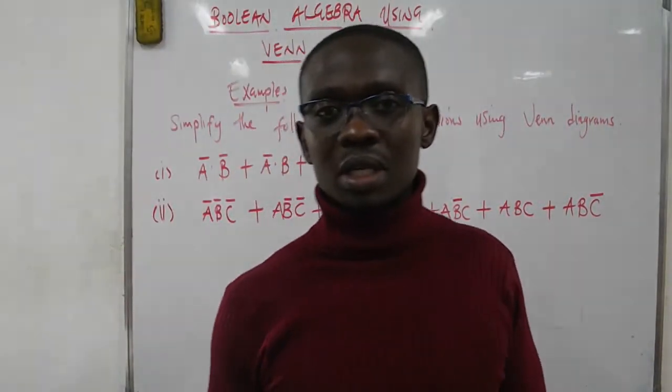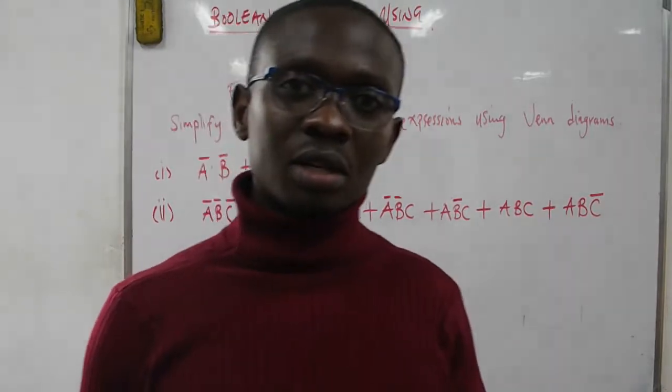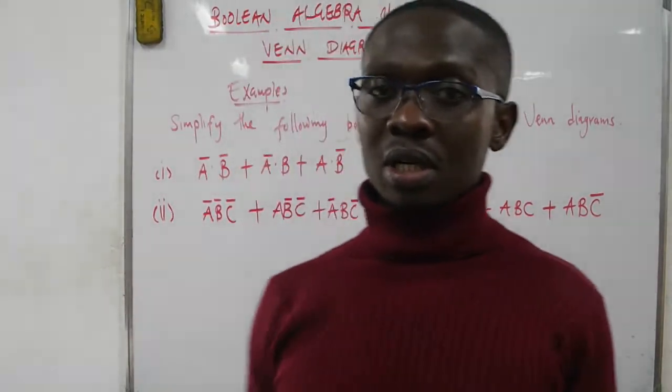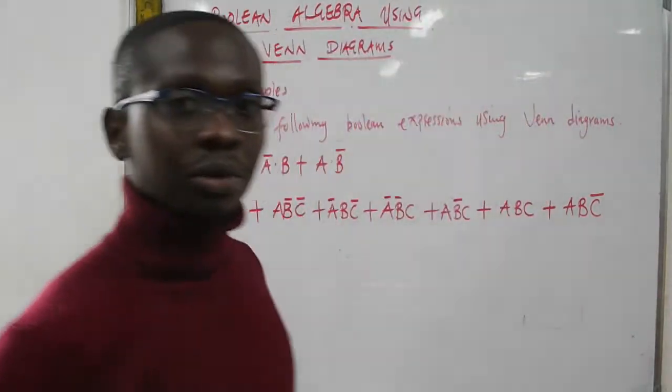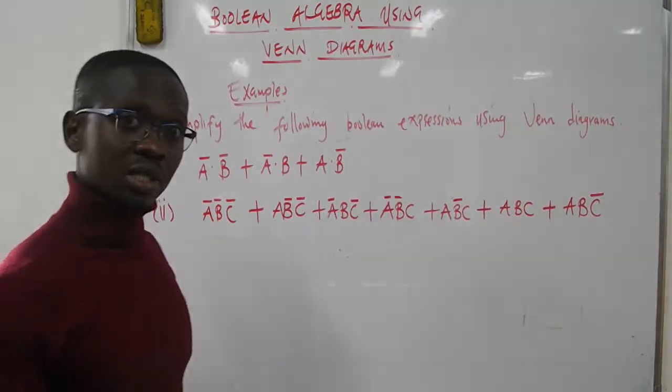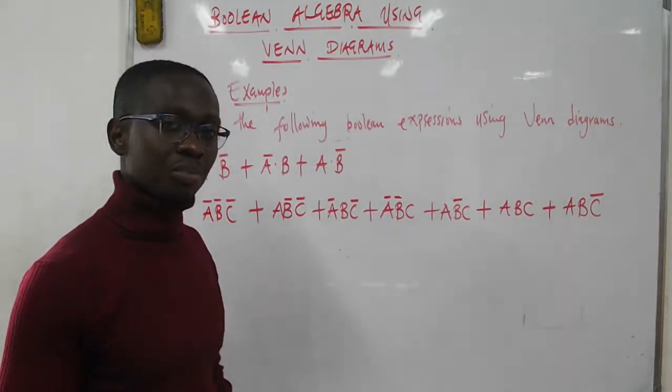Hi everyone, I welcome you to this lecture on Boolean algebra using Venn diagrams. We are going to look at two examples: one with two inputs and the other with three inputs.